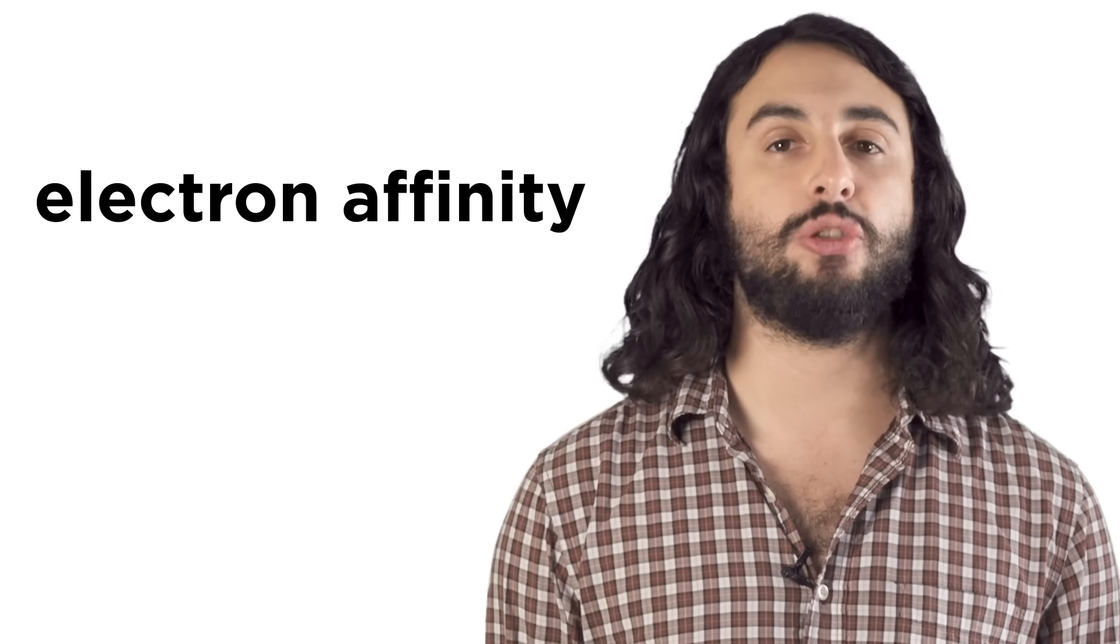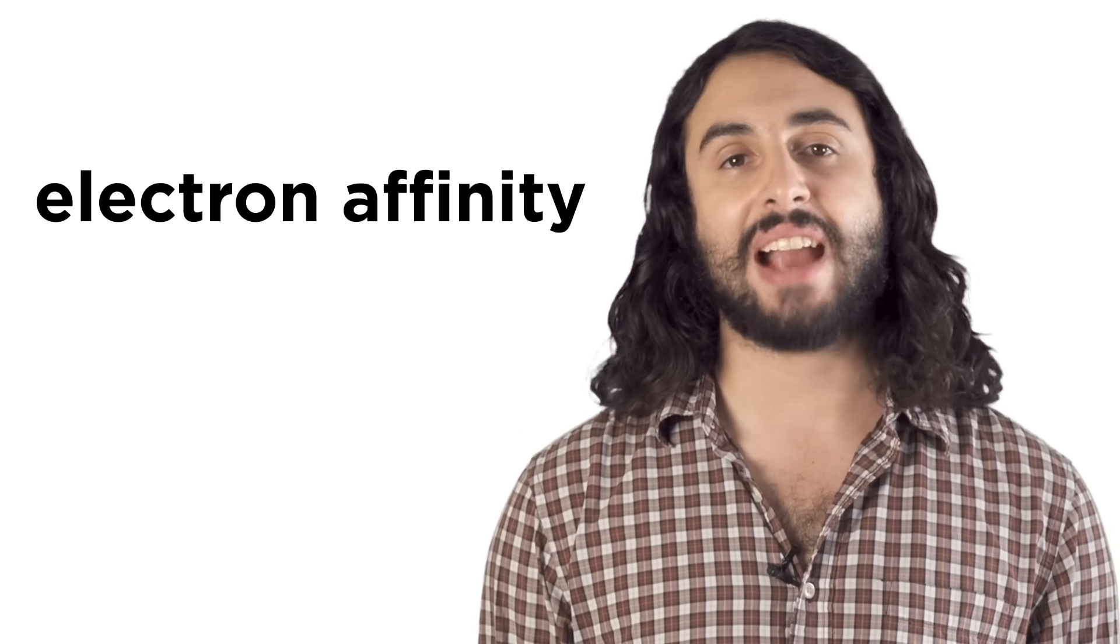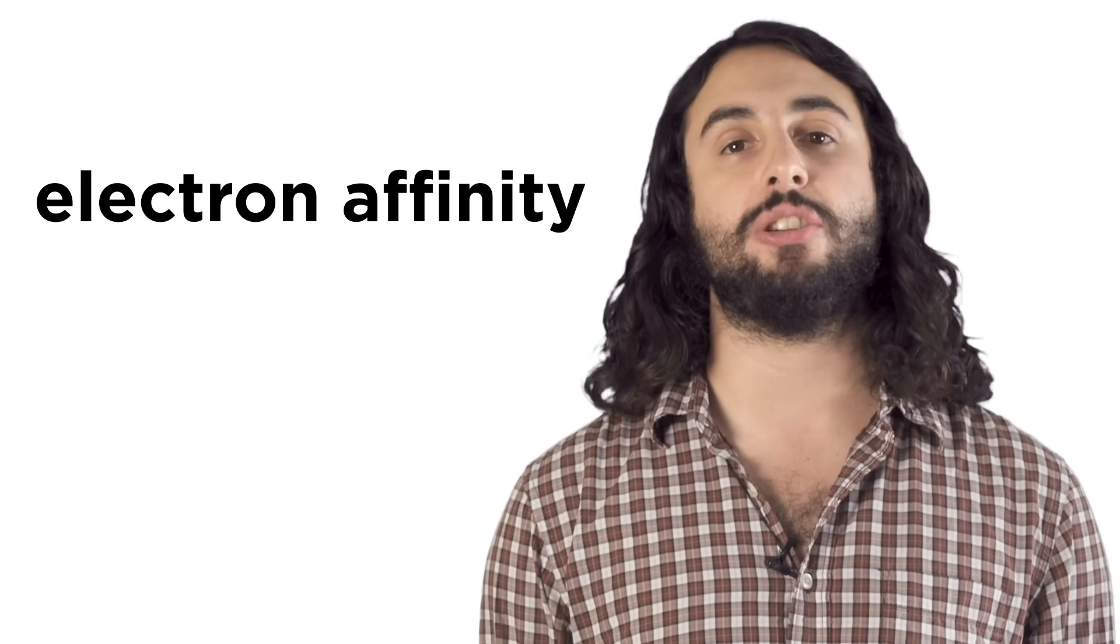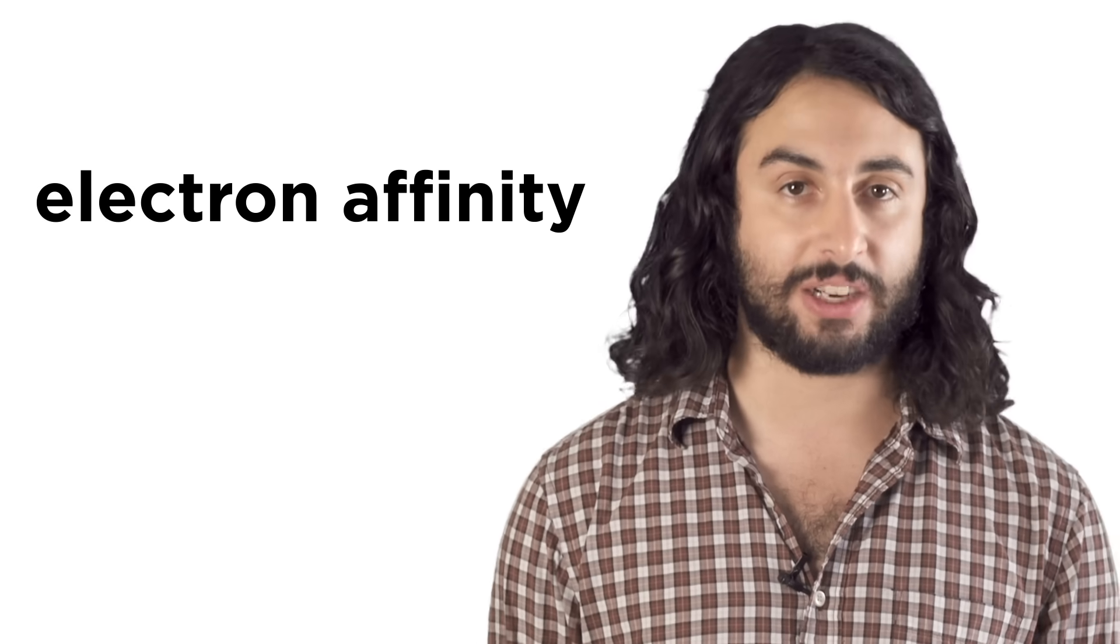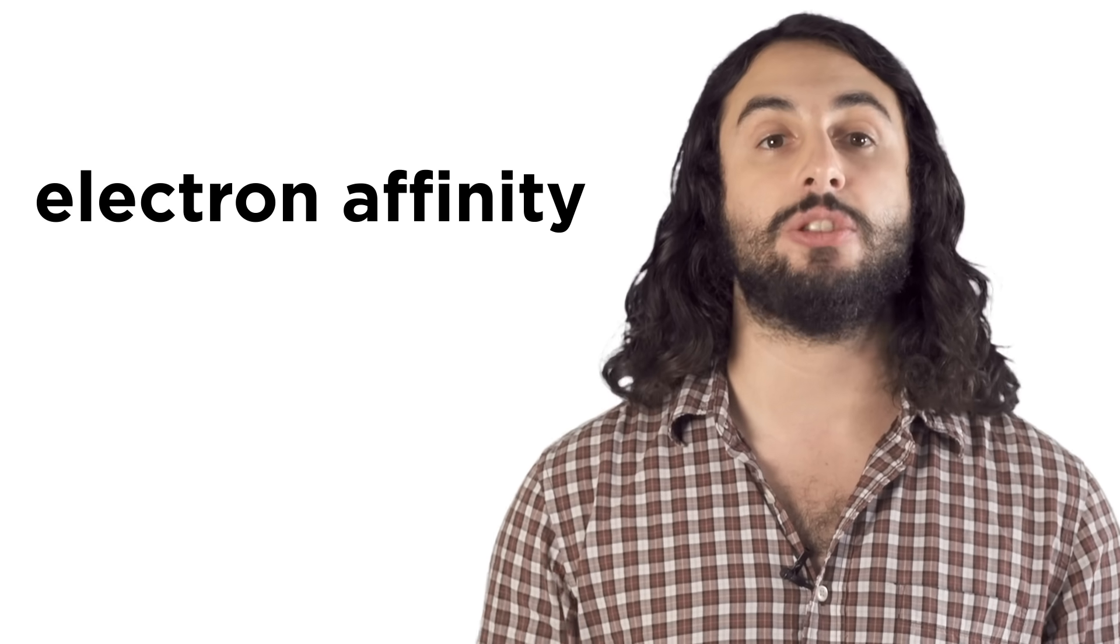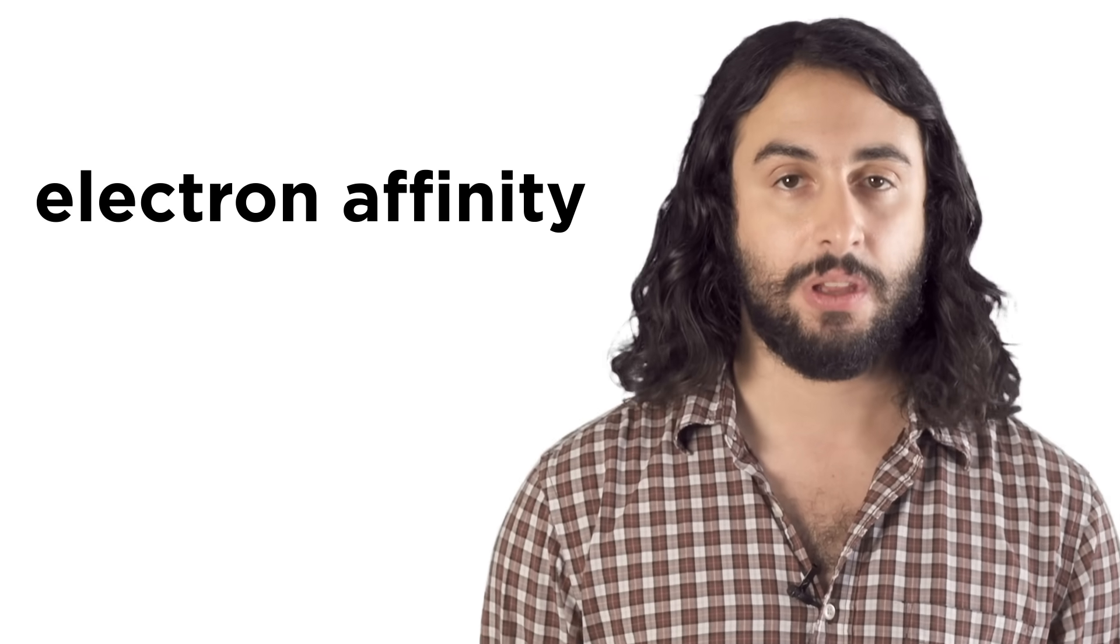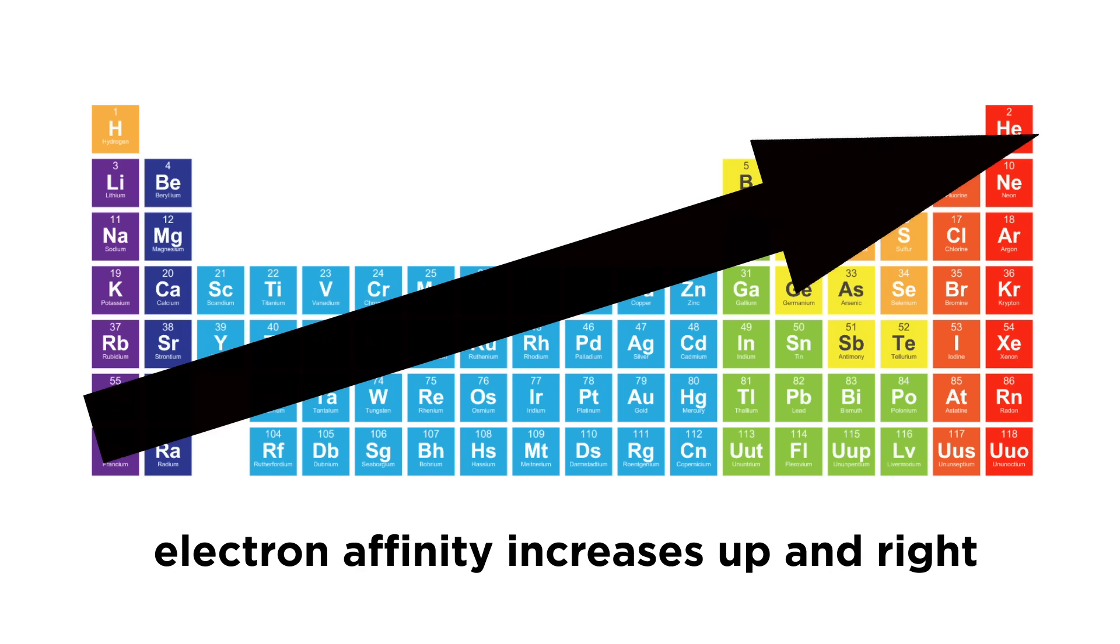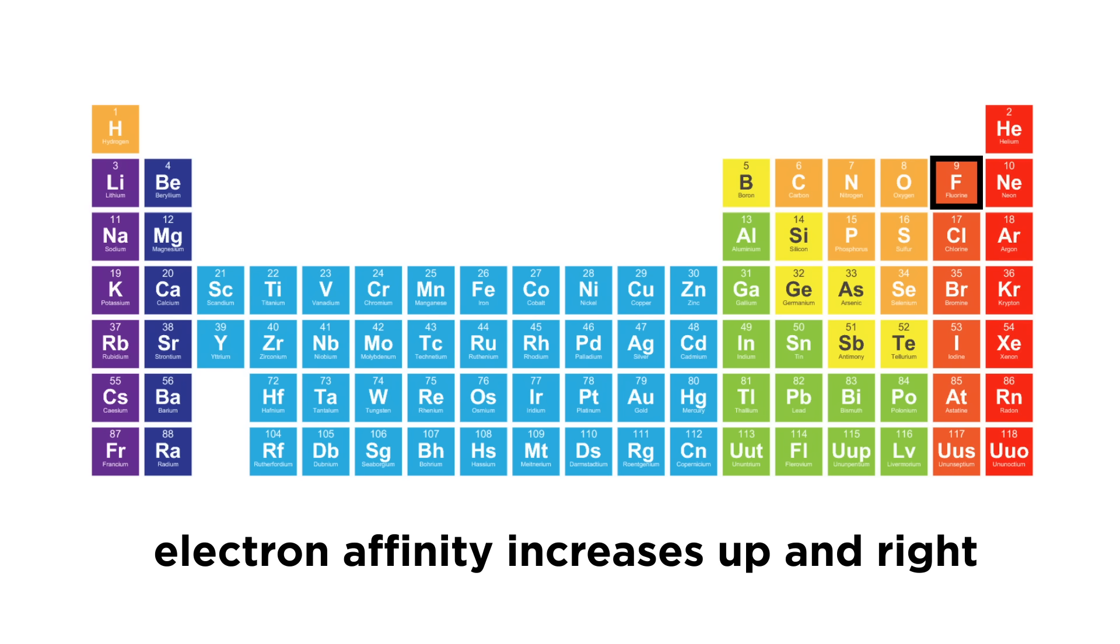Next we will look at electron affinity. This is exactly the opposite of ionization energy since ionization energy is how much energy you need to remove an electron, and electron affinity tells us how much an atom wants to gain an electron. Disregarding the noble gases as their shells are full, electron affinity increases this way. Fluorine has the highest electron affinity because if it gains one electron, it will have a full shell, or a noble gas electron configuration.